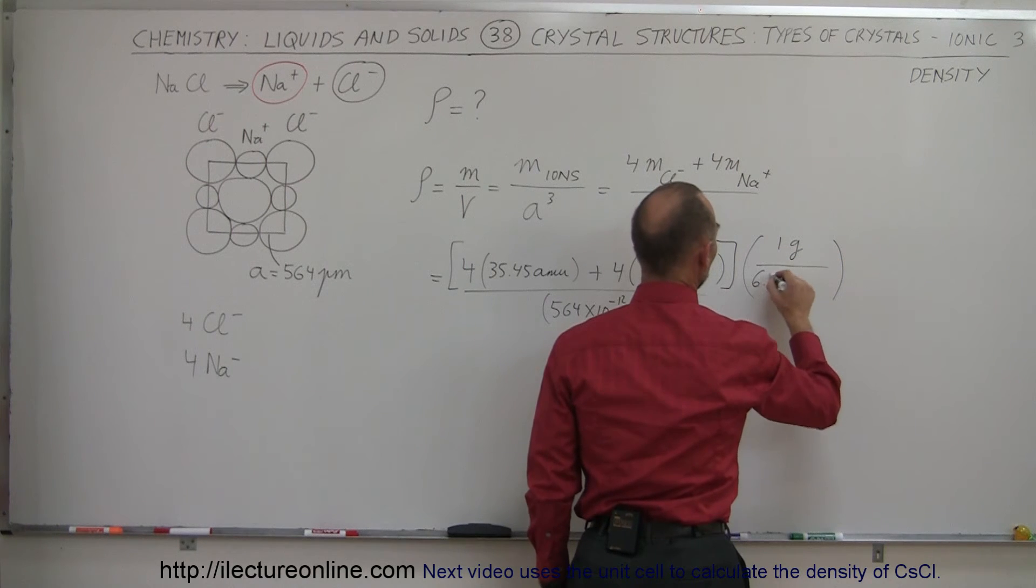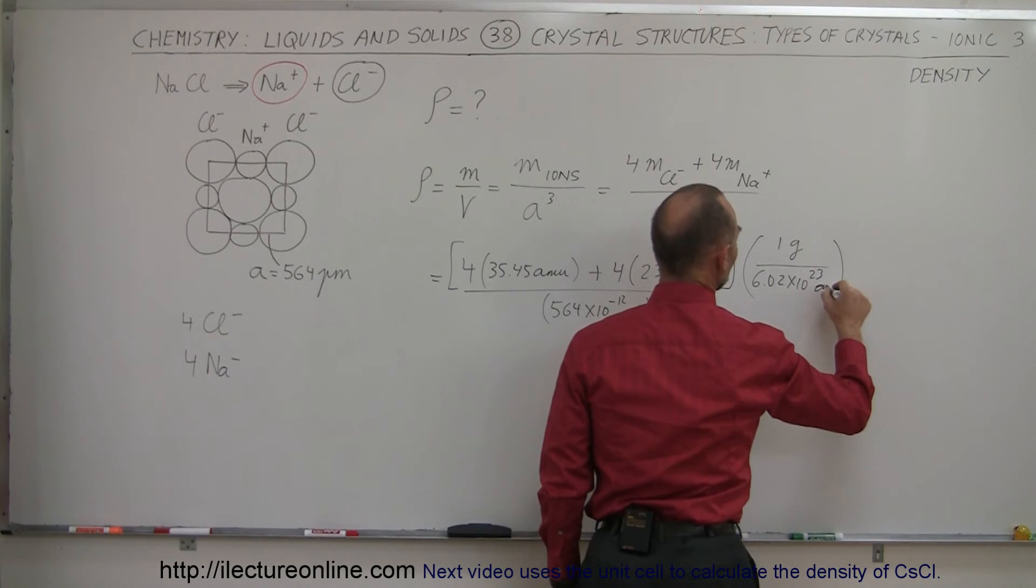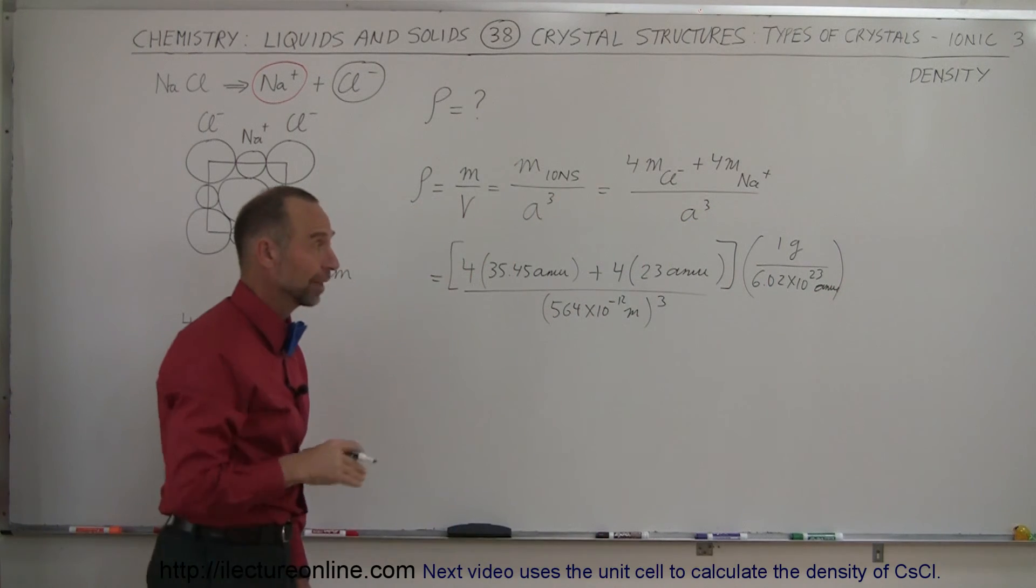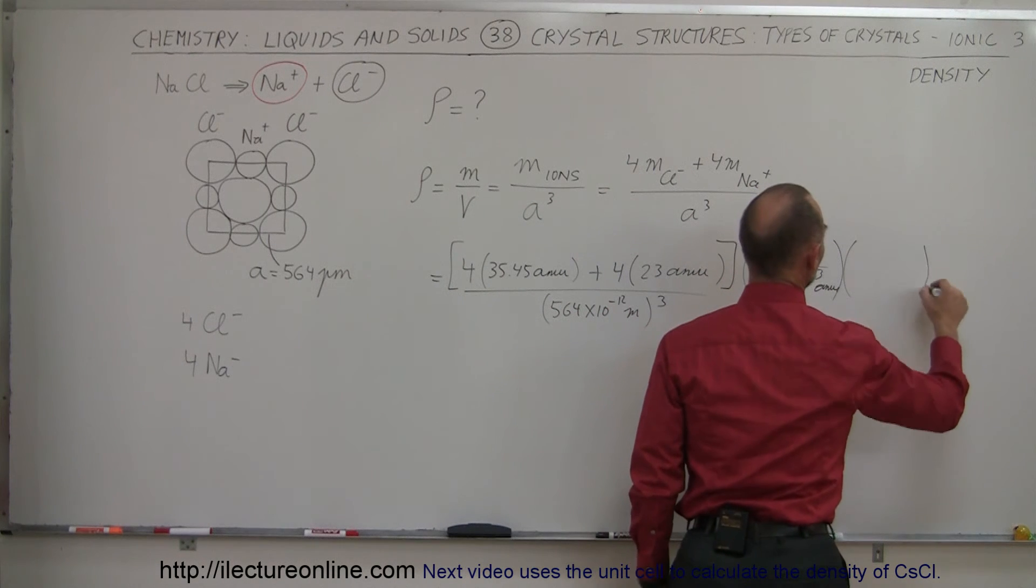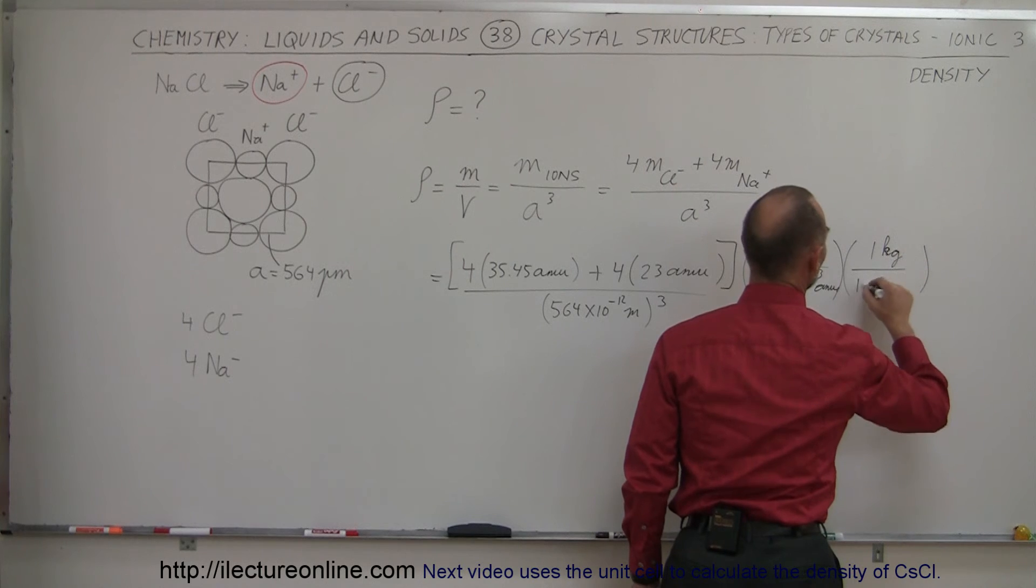One gram is 6.02 times 10 to the 23 AMUs, that's of course Avogadro's number, that's the conversion between AMUs and grams, and then we have to convert from grams to kilograms, so one kilogram is the same as 1000 grams.